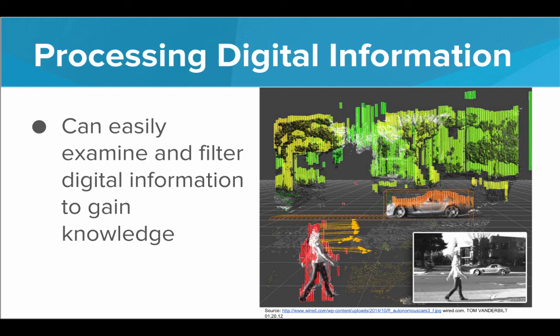We can also use computers to examine and filter digital information to gain knowledge. Here we have a picture of what a self-driving car sees. A self-driving car uses cameras and radars and several different types of measuring devices to input information from the physical world. Once that is encoded as digital information, it can use software and programs to actually predict things about the outside world — locate obstacles, predict where other cars or people are headed. This is a really incredible use of digital information.